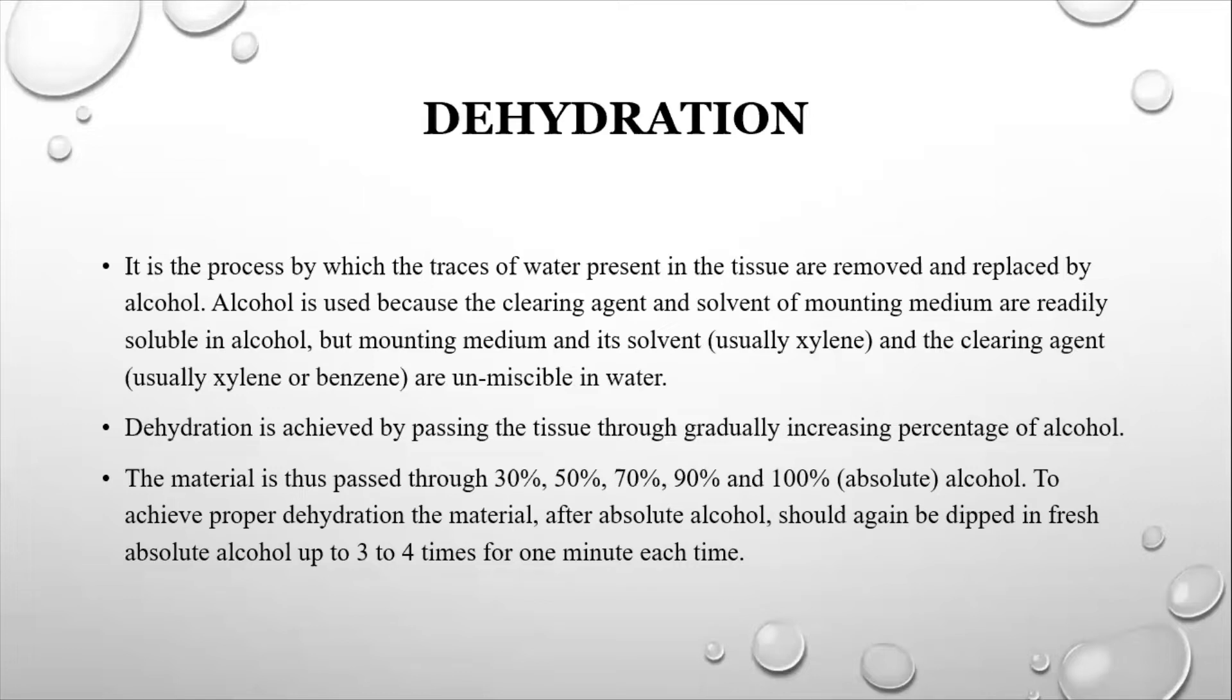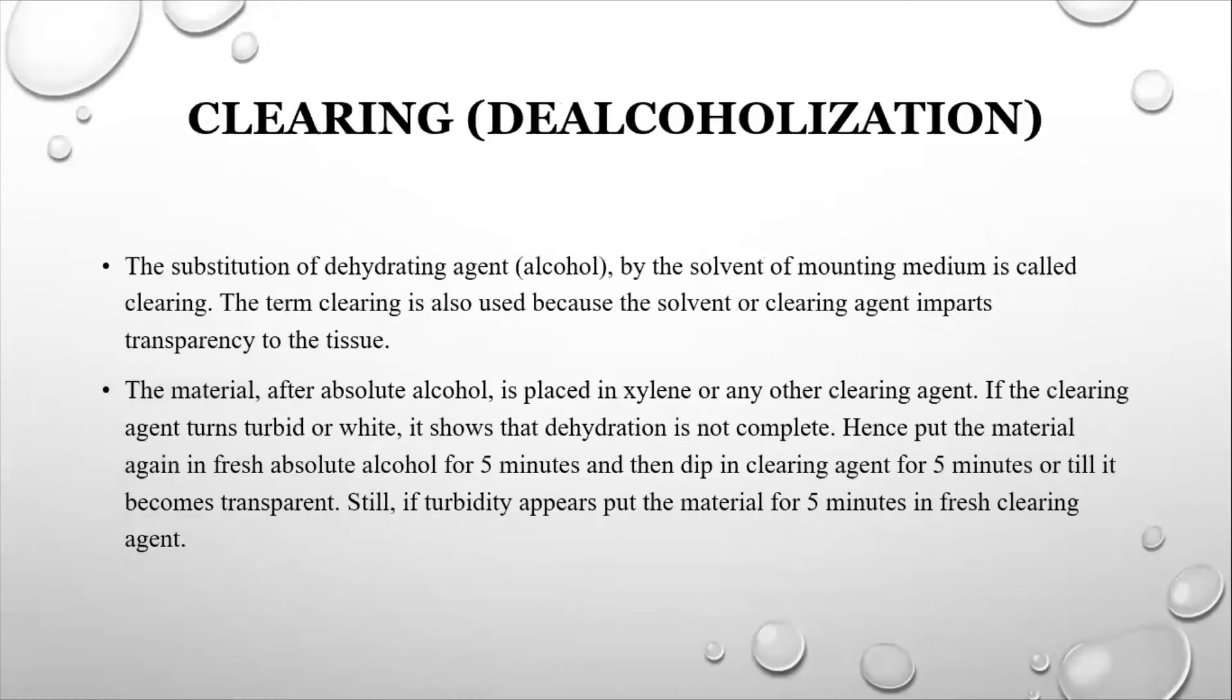Dehydration is achieved by passing the tissue through different grades of alcohol, by passing them through 30% alcohol, then 50%, then 70%, then 90%, and finally to absolute or 100% alcohol. To achieve proper dehydration, after absolute alcohol, we should again dip in fresh absolute alcohol our sample for about 3 to 4 times.